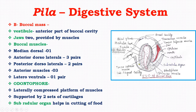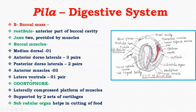The buccal muscles include: one median dorsal, three pairs of anterior dorsolateral, two pairs of posterior dorsolateral, three anterior muscles, and one pair of lateral ventral muscles — giving a total of 16 buccal muscles.